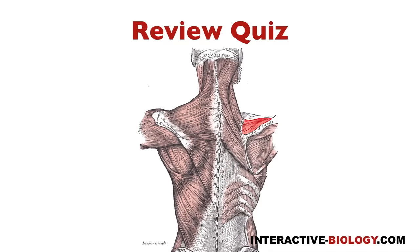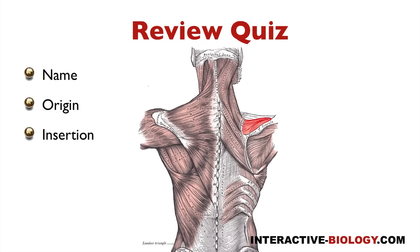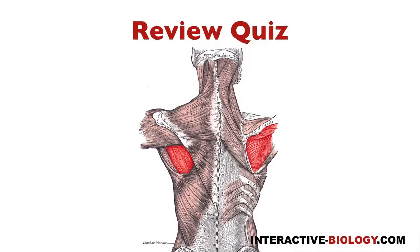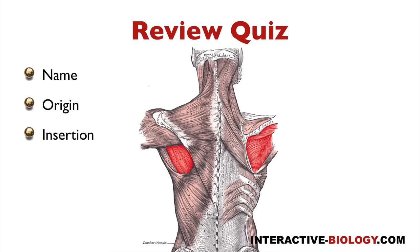Let's do a quick review. Here we have supraspinatus: the origin would be from the supraspinus fossa, and that is going to insert on the superior facet of the greater tubercle of the humerus, and the action is going to be initiating abduction of the humerus. Then we have infraspinatus, which is inferior to the spine of the scapula. The origin will be the infraspinus fossa, and it's going to insert on the middle facet of the greater tubercle of the humerus. The action is going to be external rotation.